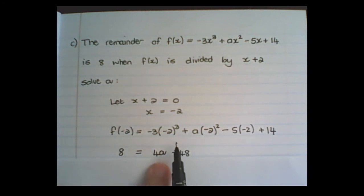This value comes from simplifying the expression. So negative 3 times negative 8 is plus 24. That becomes 4a plus 10 plus 14. So 24 plus 10 plus 14 is 48. And the 4a comes from multiplying out negative 2 squared.